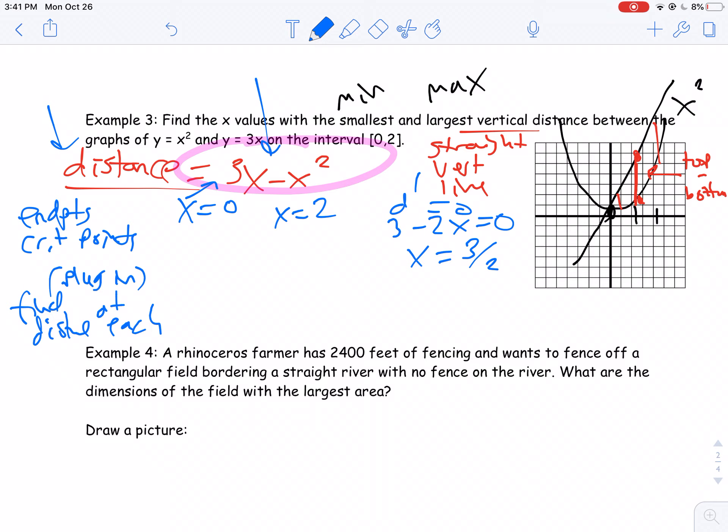So when I plug in 0 into this equation, my distance is 0. That's probably going to be my minimum. When I plug in 2, my distance there is 6 minus 4. So I have a distance of 2. When I plug in 3 halves, my distance is 3 times 3 halves minus 3 halves squared. So that'll be 9 halves minus 9 fourths. So that's equal to 9 fourths. So that's 2 and a fourth. So that's going to be my maximum distance.